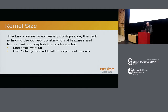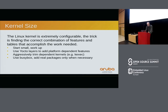Use the Yocto layers mechanism to add platform-dependent features. It really helps you configure different platforms differently. If you have dependent kernels — for instance, a kexec kernel or a boot kernel — you trim those even more aggressively. Use BusyBox. Start with BusyBox, and when you need real features that aren't in BusyBox, just use the real packages. Don't try to configure BusyBox — you go down a rat hole. We would use the real packages when BusyBox wasn't enough.